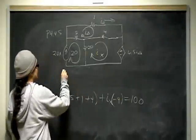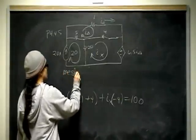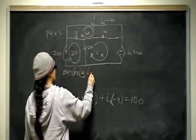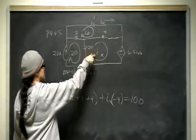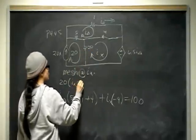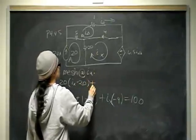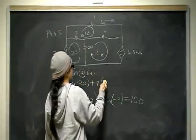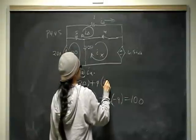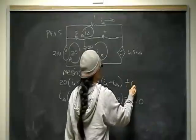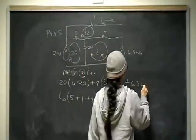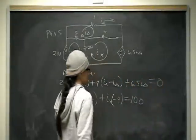Now we have mesh at I sub x. That equation is going to be 20 ohms times I sub x minus 20, plus 4 times I sub x minus I sub delta, plus 6.5 I delta. That's all going to equal 0.